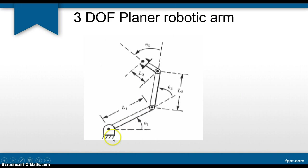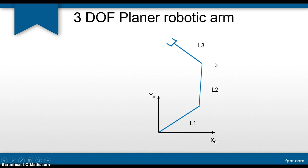We have a base frame where we assign coordinate system number zero. Then we have the first joint, second joint, and third joint. Link lengths will be l1, l2, l3, and theta1, theta2, theta3 are relative rotations of all the joints. At the base or fixed location we have a global coordinate system represented by zero — x0, y0. For this example, the z-axis will be perpendicular to this plane, or perpendicular to the screen, and link lengths are shown as l1, l2, l3.